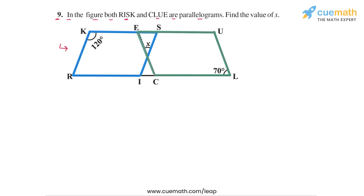Both of these quadrilaterals are parallelograms. Using this, we have to find the value of X. What is X? X is this angle that's formed here. Let's call this point of intersection T. So X is the angle which is formed at this vertex, this point T inside the triangle EST.